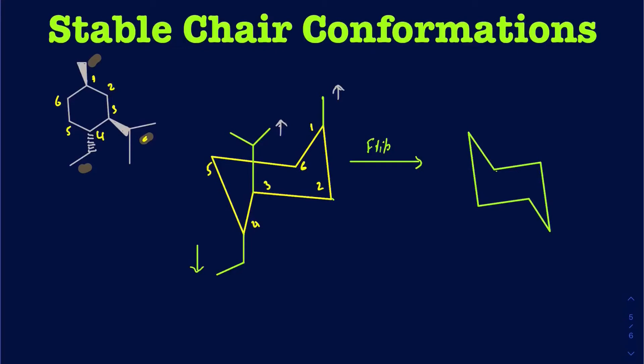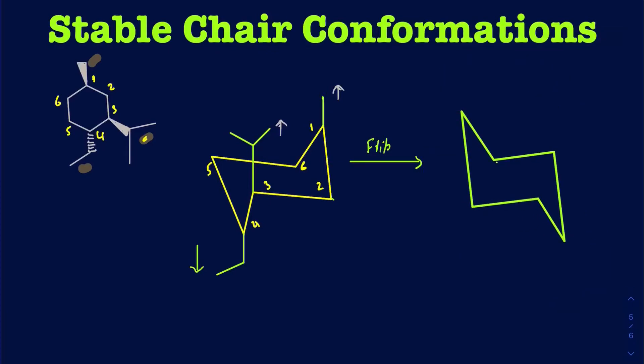When you flip everything, your carbons kind of move. Carbon one is here, carbon two, three, four, five, and six. Once you have drawn one chair conformation, the flipped form is relatively easy to draw. In the flipped form, your axial position is going to become equatorial, and vice versa.